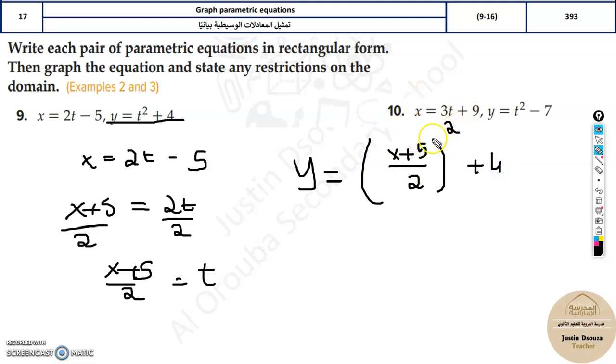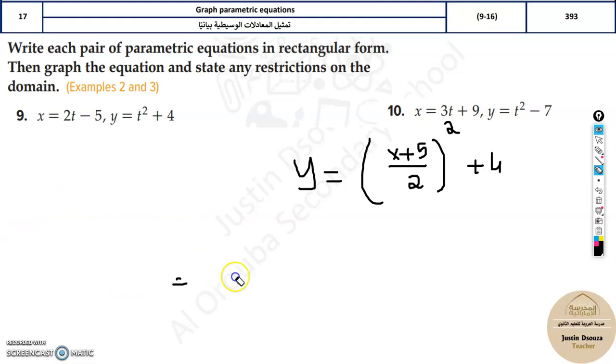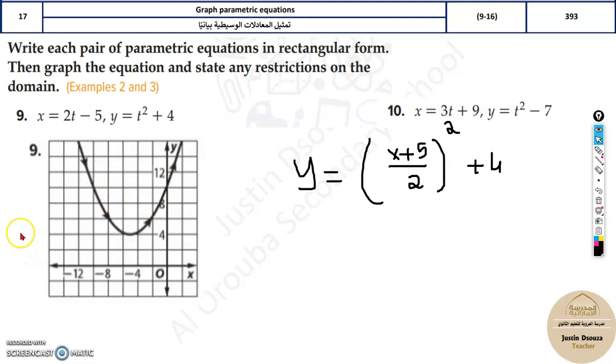This is enough. You can simplify further on. Apply the X plus 5, the whole square formula. It will be 2 squared down. And then, all that can be done. Or just leave it over here. It is fine. This is the rectangular form. Rectangular form means you have X and in terms of X and Y.